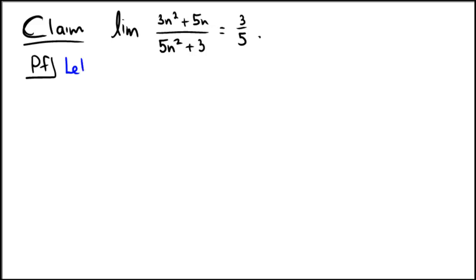So first step, let epsilon greater than 0 be given. It's always the first step of an epsilon N proof because it's a universally quantified statement.